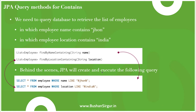Behind the scenes, JPA will create and execute the following query: SELECT * FROM employee WHERE name LIKE '%keyword%'. Internally it uses the LIKE operator. Similarly for location: SELECT * FROM employee WHERE location LIKE '%India%'. This is how we create the query method for 'containing'. Let's jump into the STS IDE and create the Spring Boot project.